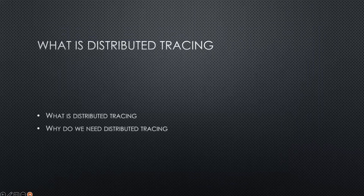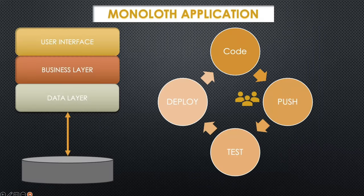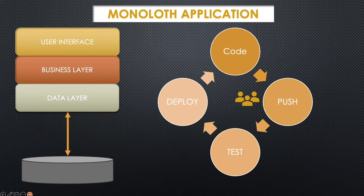Let's understand what distributed tracing is and why we need it. Not too long ago, during the era of monolithic development, practicing agile development was quite the hurdle. The routine involved coding, pushing code updates, and patiently waiting through an extensive QA and testing process. Finally a new version would emerge, but this happened only every few months or sometimes even years. Deployment was monitored centrally and auditing tools focused on a single application.